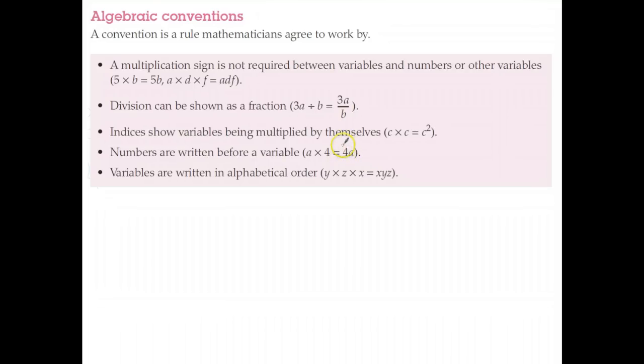And finally, if you're multiplying a number of variables together, we tend to write them in alphabetical order. So y times z times x, we rewrite that as just x, y, z, without the multiply signs.